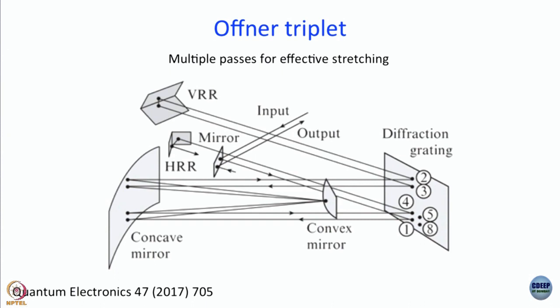Unlike the other geometries, this looks like a more complicated arrangement. First of all you have a plane mirror, then you have a grating, after the grating you have a concave mirror, followed by a convex mirror, followed by this HRR. H and V would mean horizontal and vertical respectively. These are called roof retro reflectors. Usually these are very good because the angle between the two reflecting planes is defined.